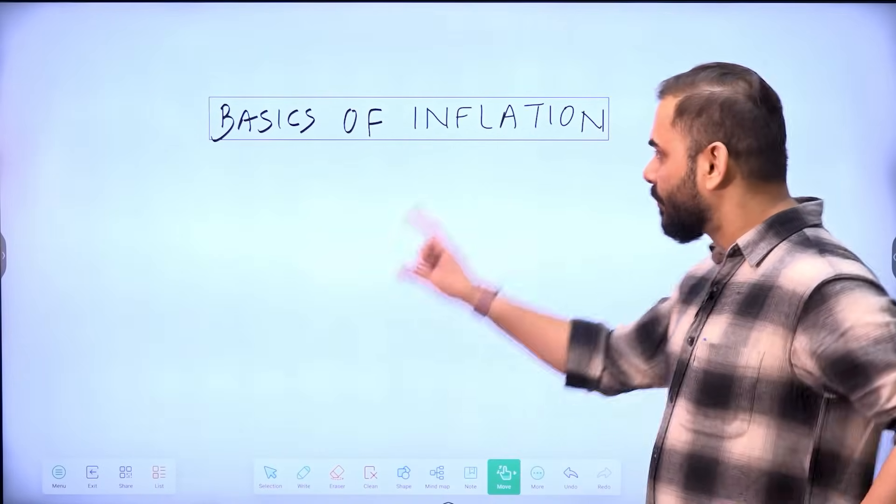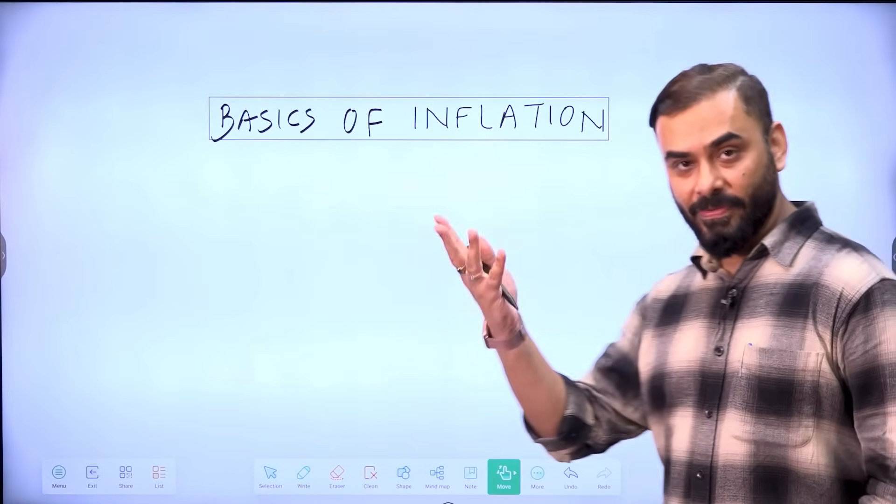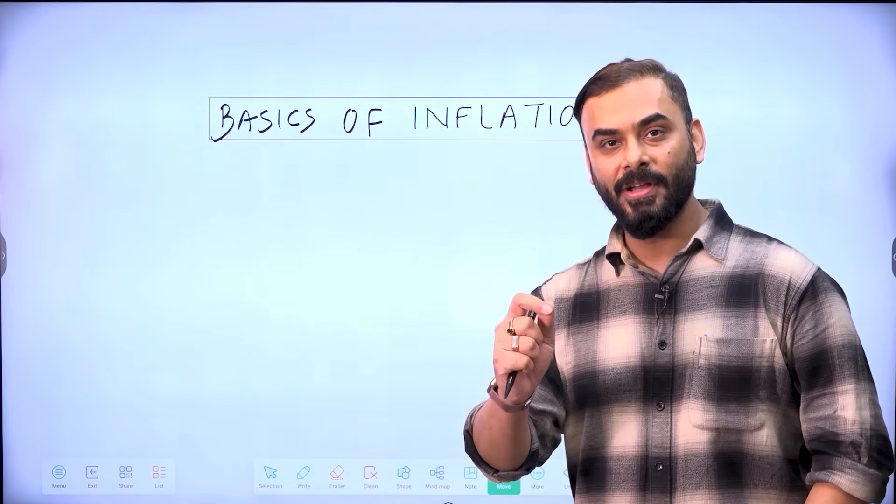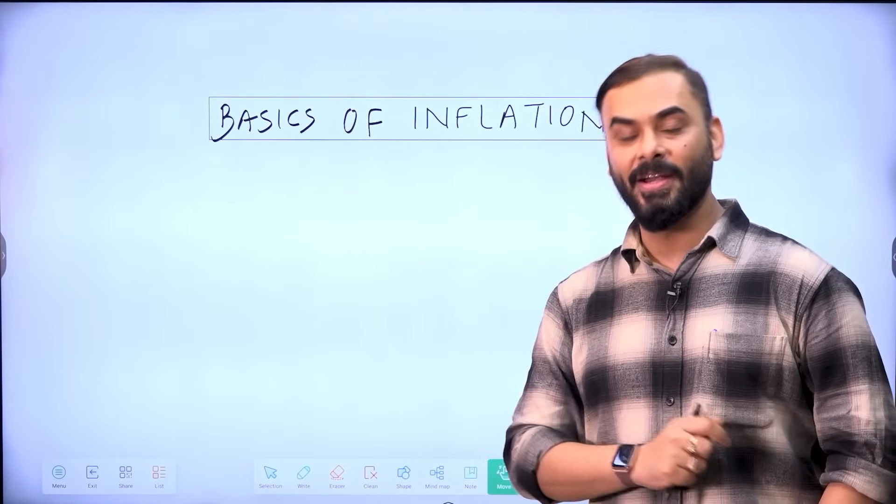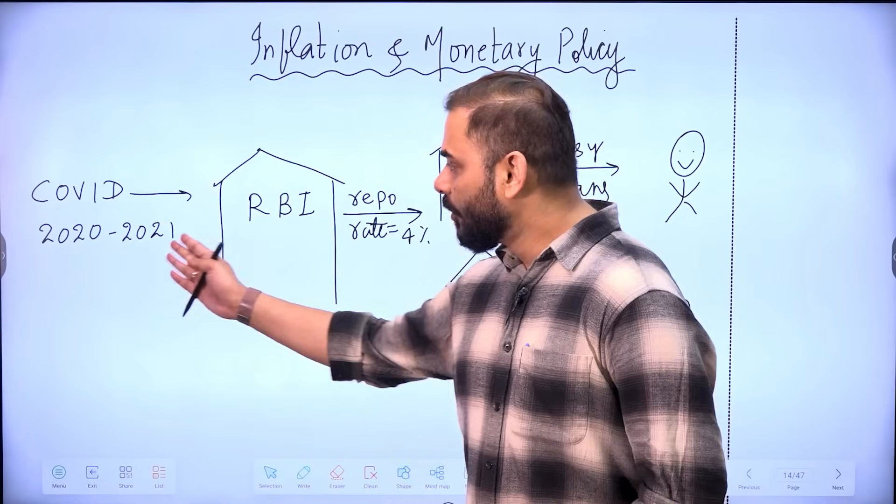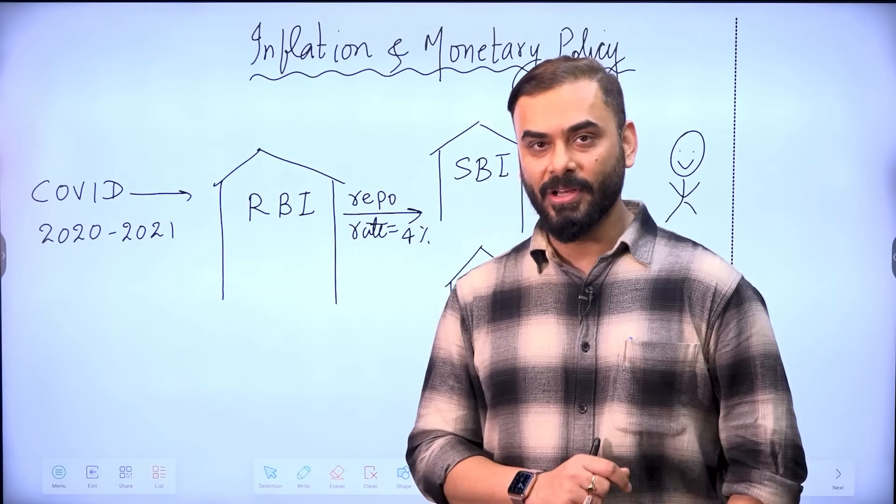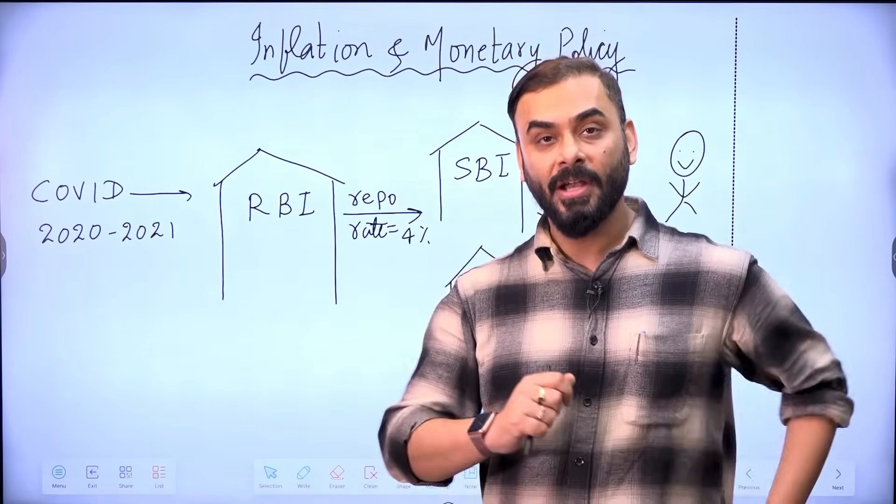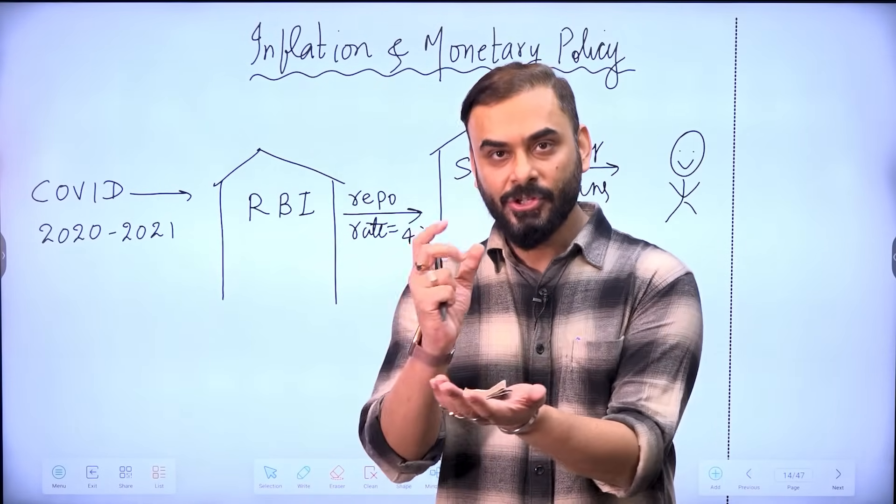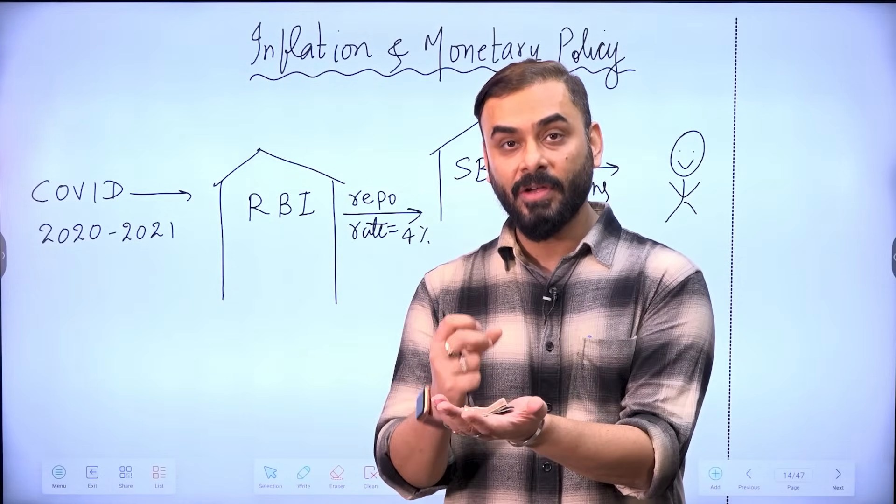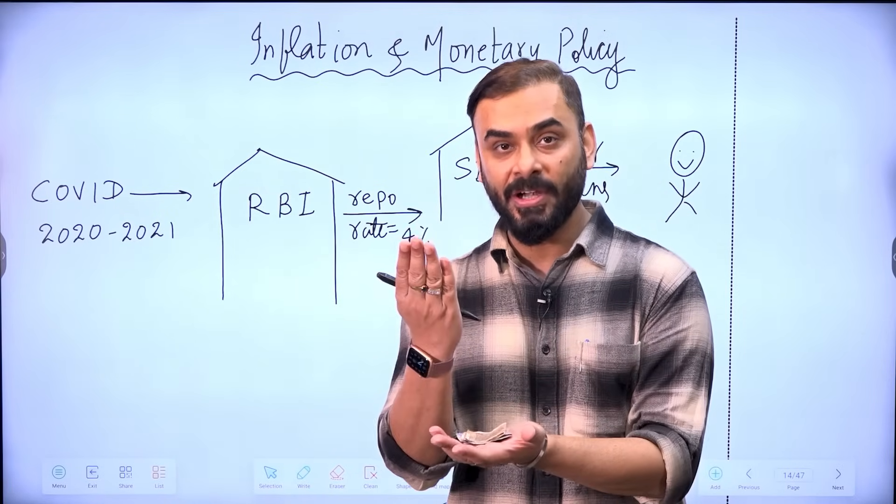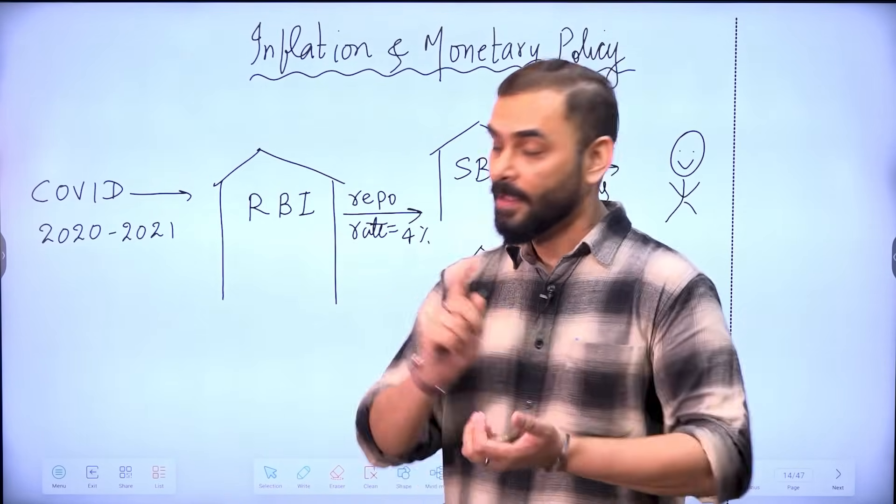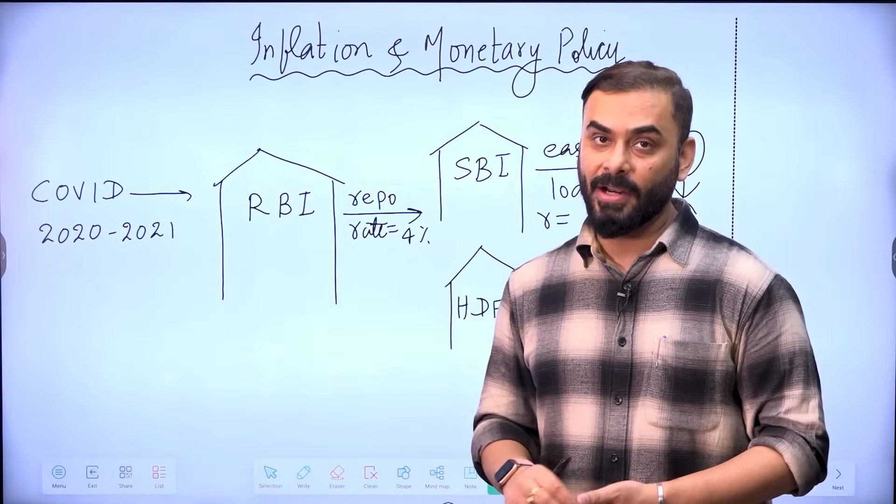So see guys, we are going to touch upon a topic which is basics of inflation and how Reserve Bank of India tries to control inflationary tendencies in the economy. Now see, during COVID 2020-2021, peak of COVID, what did the government of India want? Government of India wanted that people should have more cash in their hand because during COVID-19, when people were falling sick, when our requirement was health expenditure, you need cash in your hand.